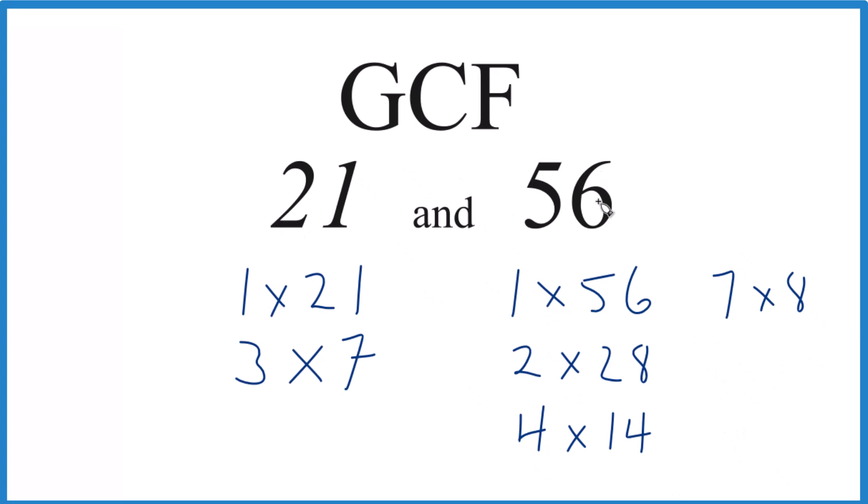So now we look at 21 and 56 and compare the factors. What's the greatest common factor? 1 is a common factor, and so is 7. 7 looks like it's the greatest common factor. So the GCF for 21 and 56 is 7.